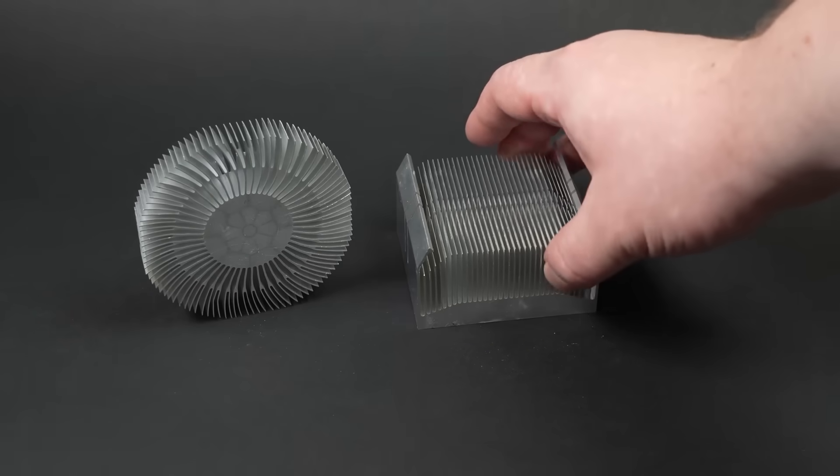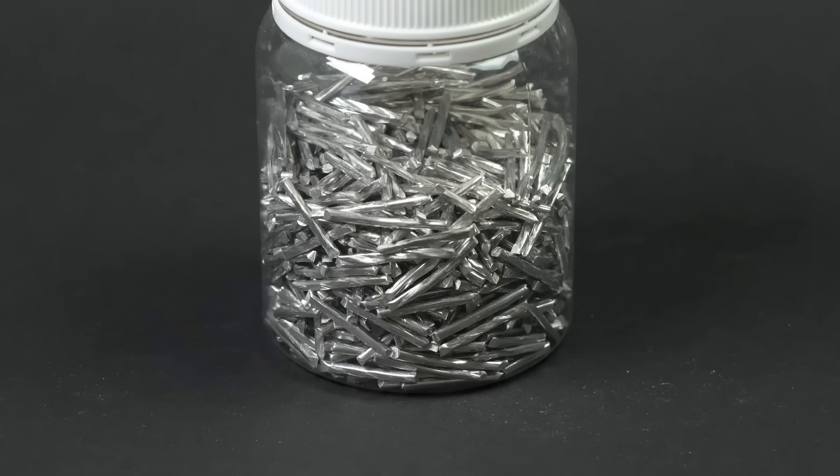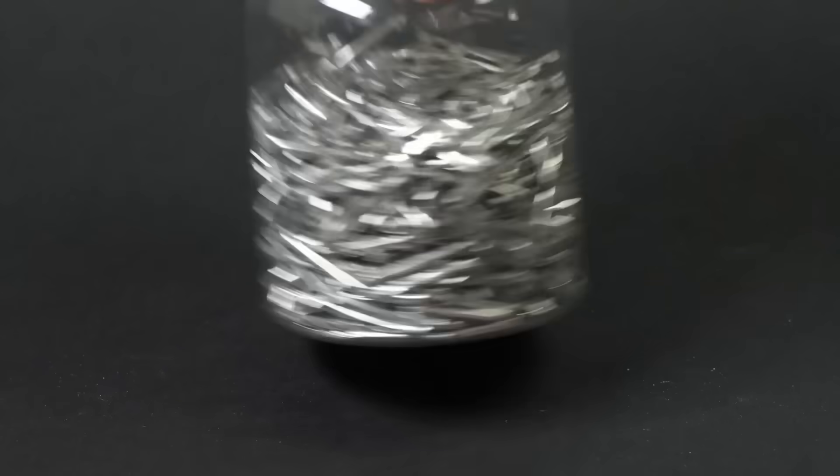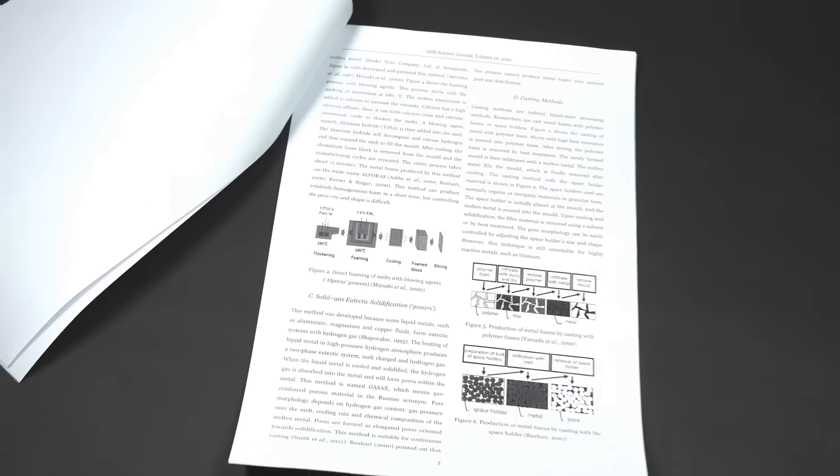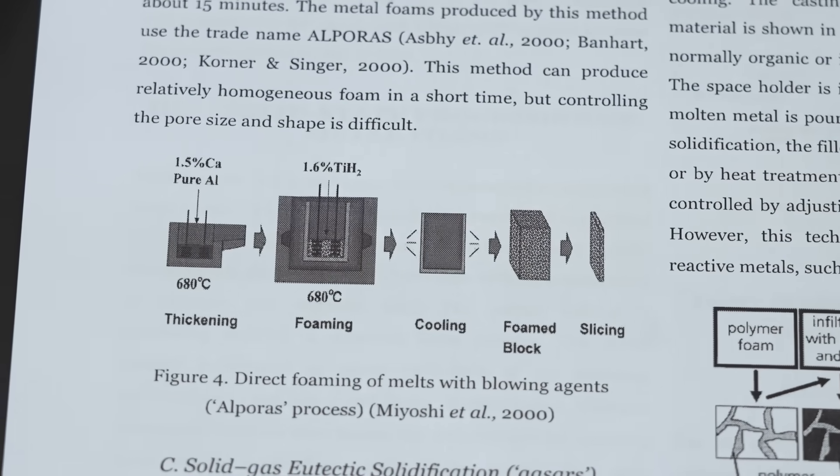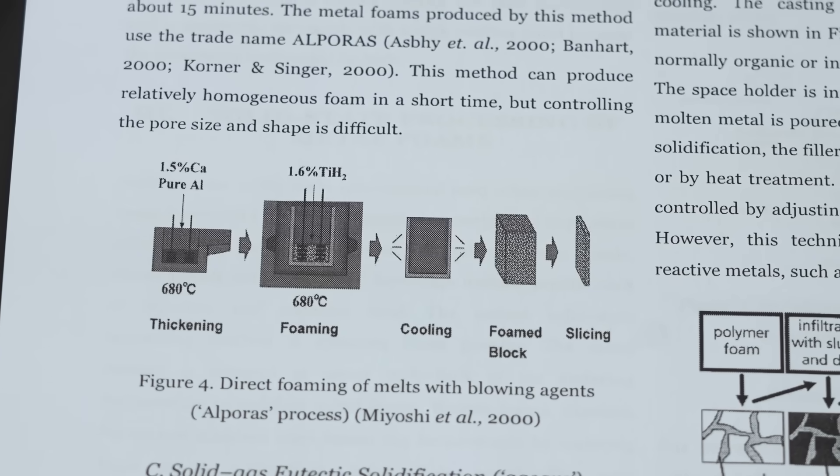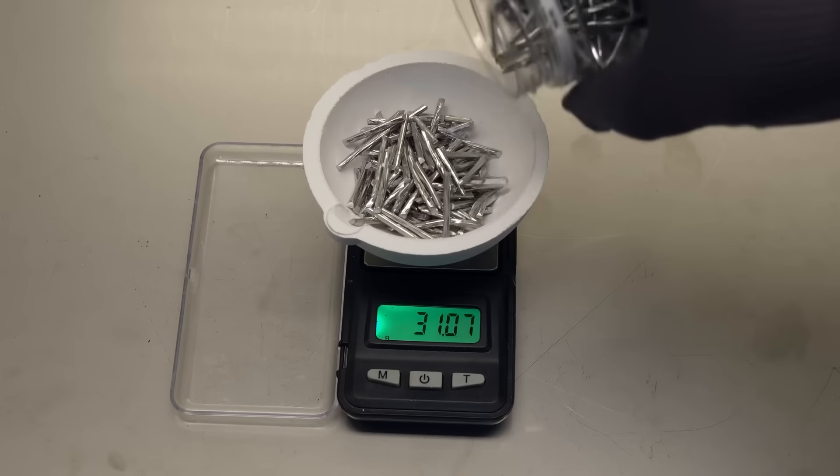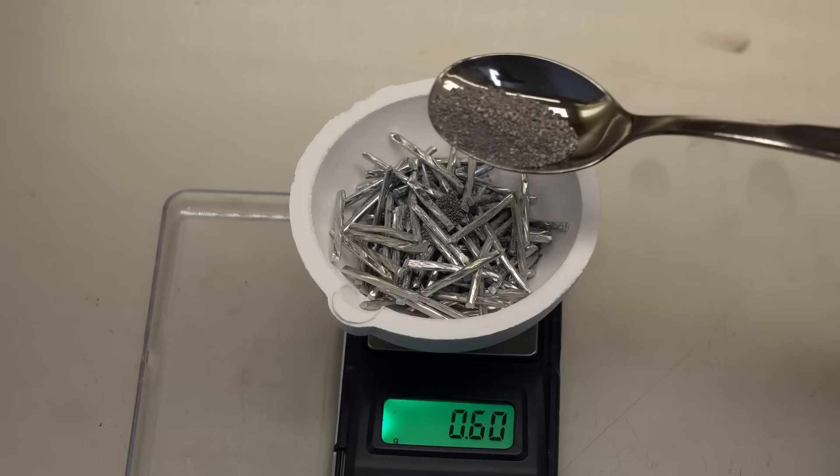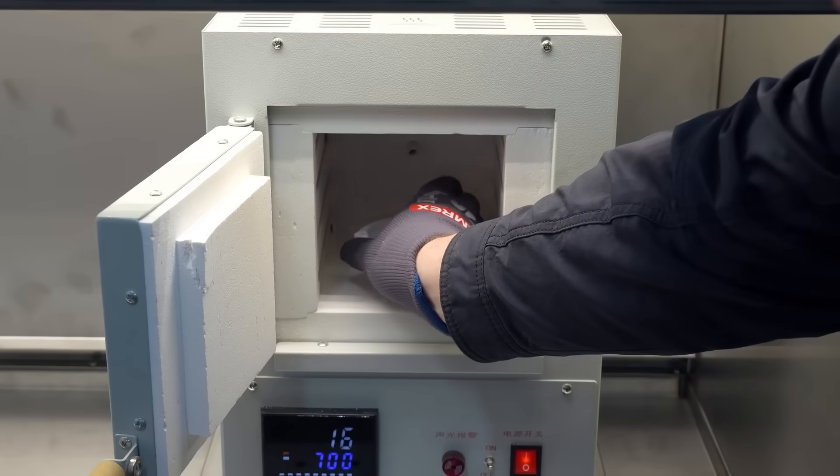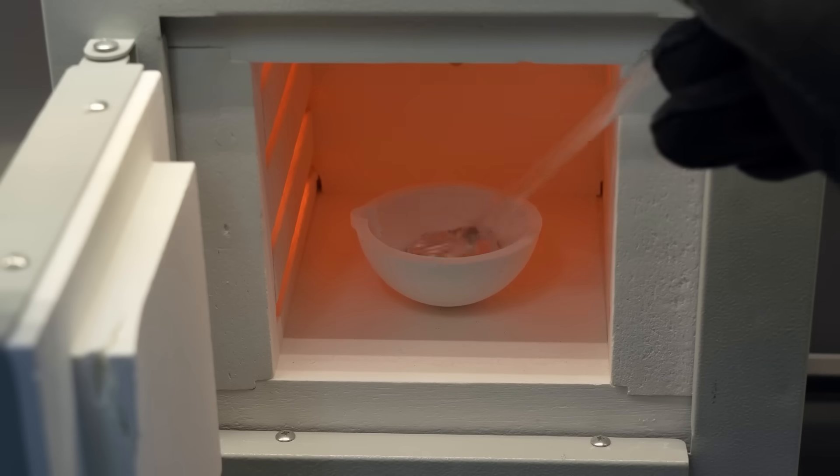As you understand, no matter how light lithium is, it's simply impossible to make any structures from it due to its high chemical reactivity. There might be some other metal, or even an alloy, that is just as light as lithium but less chemically active and stable in the air. To figure this out, I started looking for information online. And after some time, I found out that there are already so-called foam metals.